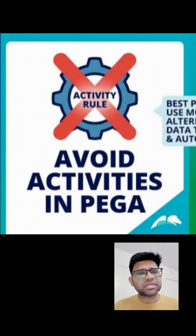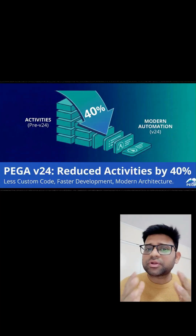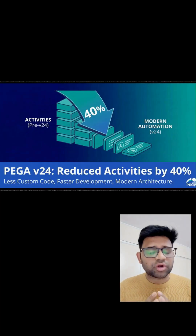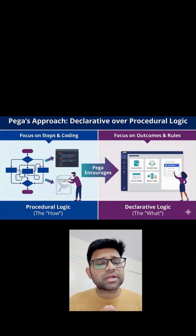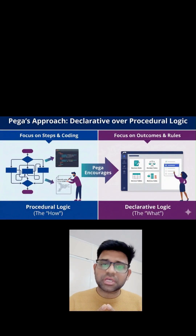If we are still building activities the way we did in Pega 7 or 8, we are officially behind. Pega 24 has reduced the dependency on activities by almost 40%, not because activities are outdated, but because Pega is now encouraging declarative over procedural logic.